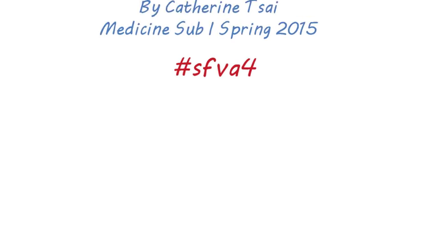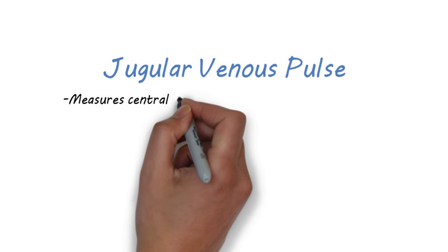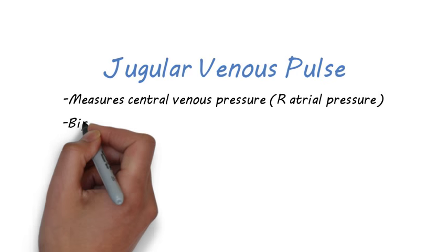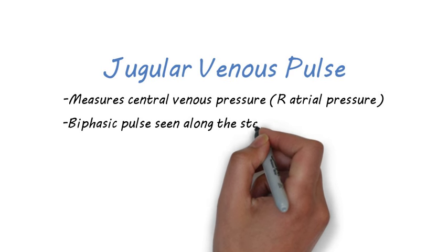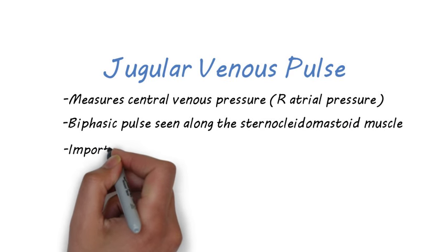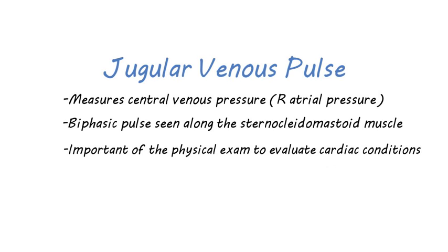The JVP, or jugular venous pulse, is a clinical sign that allows you to measure the central venous pressure, or right atrial pressure. It is a biphasic pulse that can be seen along the sternocleidomastoid muscle. It is an important part of the physical exam when diagnosing and evaluating certain cardiac conditions.